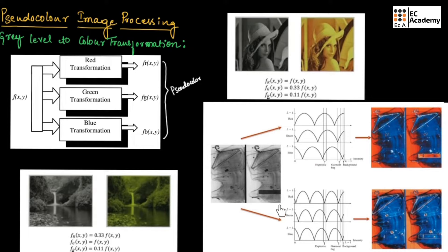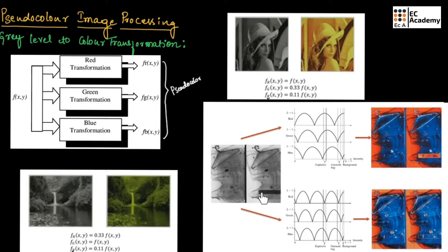This image shows the X-ray machine in the airport. As you can see, we have two images. The image on the left contains the garment, and the image on the right contains the garment along with an explosive. This black rectangular object is an explosive that needs to be identified.